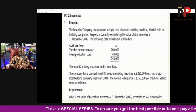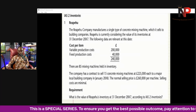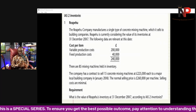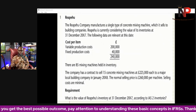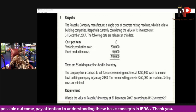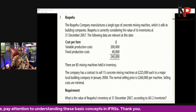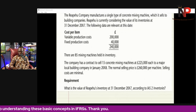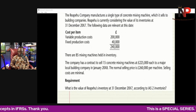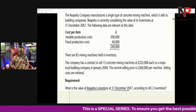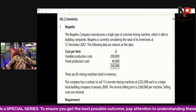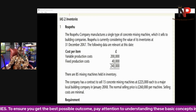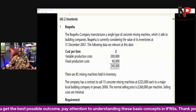Let's look at another question in relation to inventory and see how the standard plays out. Stay carefully with me here because the structure of the question sometimes determines the way we work out. The question asks: what is the value of Repair Who's inventory at 31st December 20X7 according to IAS 2 Inventories? Know the principle: lower of cost and net realizable value — that's basically what we need to do.